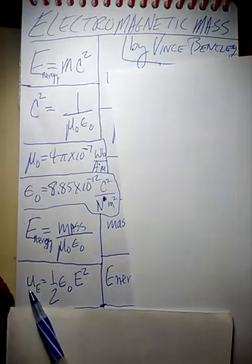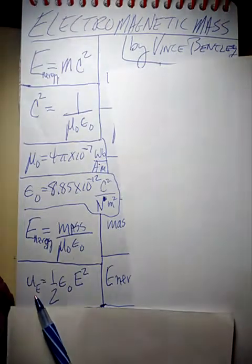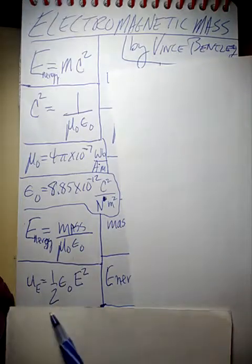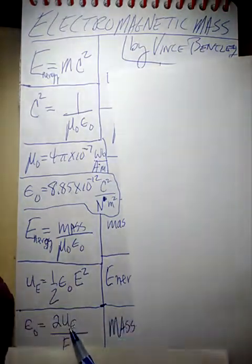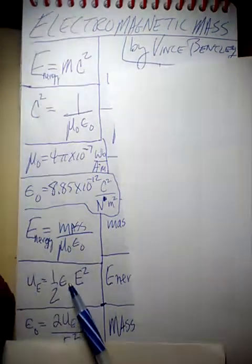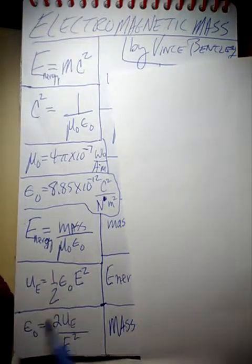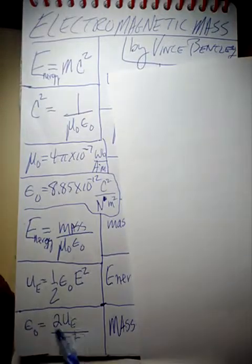We have the electric energy density in joules per meter cubed of an electric field is equal to this. And if we solve for the constant, this is the same epsilon naught that is here. If we do a little bit of algebra, epsilon naught is equal to this right here.